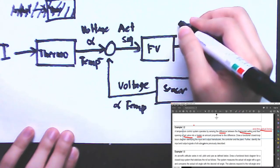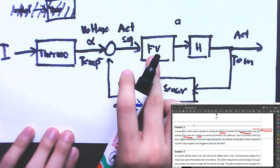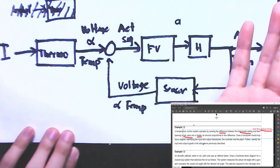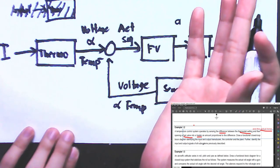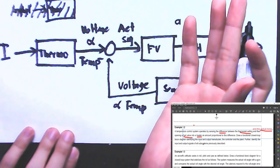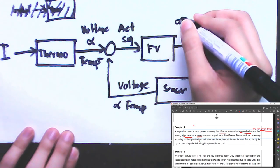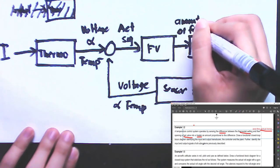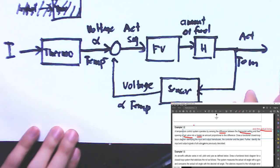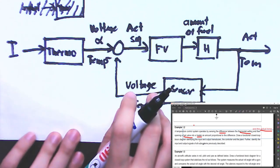Since this is a valve, it opens to let more fuel in. More fuel into the heater means more heat is produced. So the output signal from the controller is the amount of fuel. This completes the functional block diagram describing example 1.2.